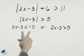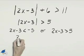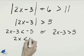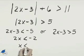We'll solve 2x minus 3 is less than negative 5 by adding 3 to both sides. 2x is less than negative 2. Divide both sides by positive 2. x is less than negative 1.